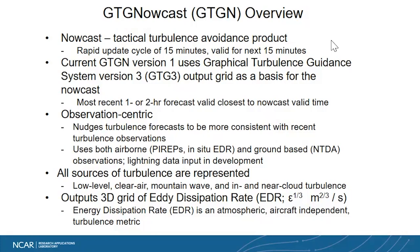The output of GDGN is a 3D grid over the continental United States, a 3D grid of eddy dissipation rate — an atmospheric metric of turbulence that is independent of the aircraft. One can relate that independent turbulence metric to the reaction that a large or small aircraft has by converting it. We've done studies comparing pilot reports with EDRs to see how EDR translates to larger aircraft like 747s, which react differently to turbulence than smaller aircraft like 737s.